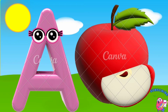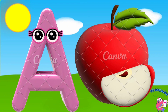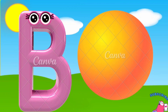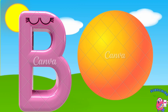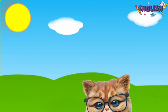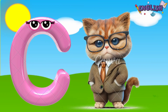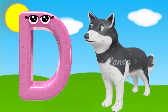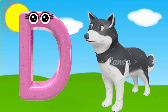A is for apple, a, a, apple. B is for ball, b, b, ball. C is for cat, c, c, cat. D is for doll, d, d, doll.